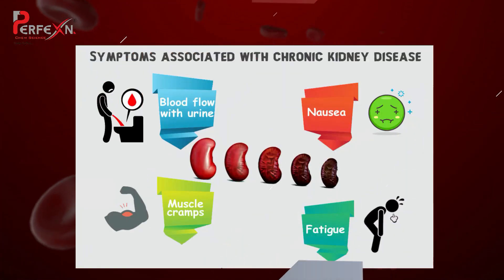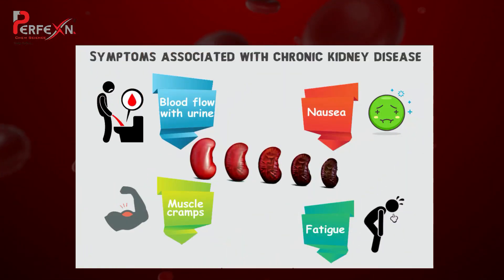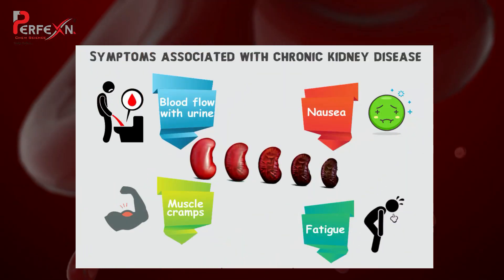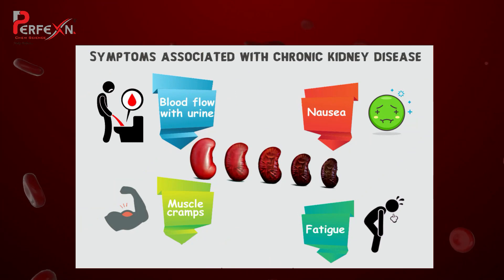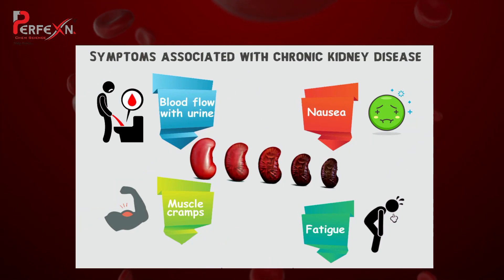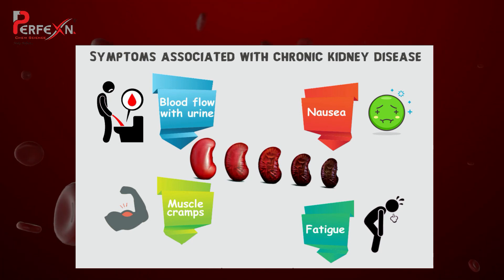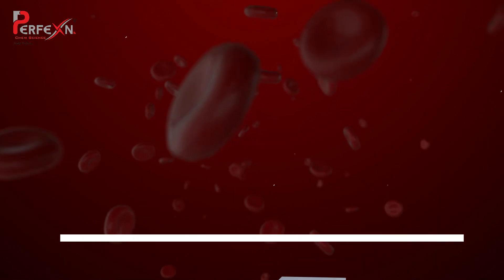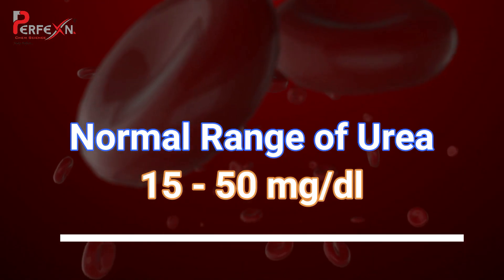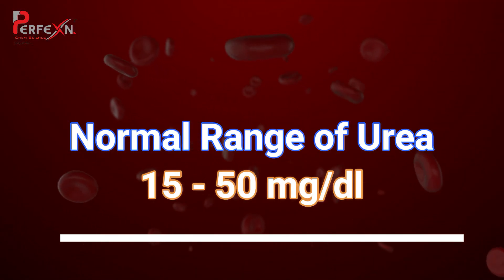The symptoms are dry skin, peripheral nerves, heart function, palpitations, muscle weakness, bone pain, shortness of breath, increase of blood pressure, nausea, constipation, etc. And the normal range of urea is 15 to 50 mg per dl.